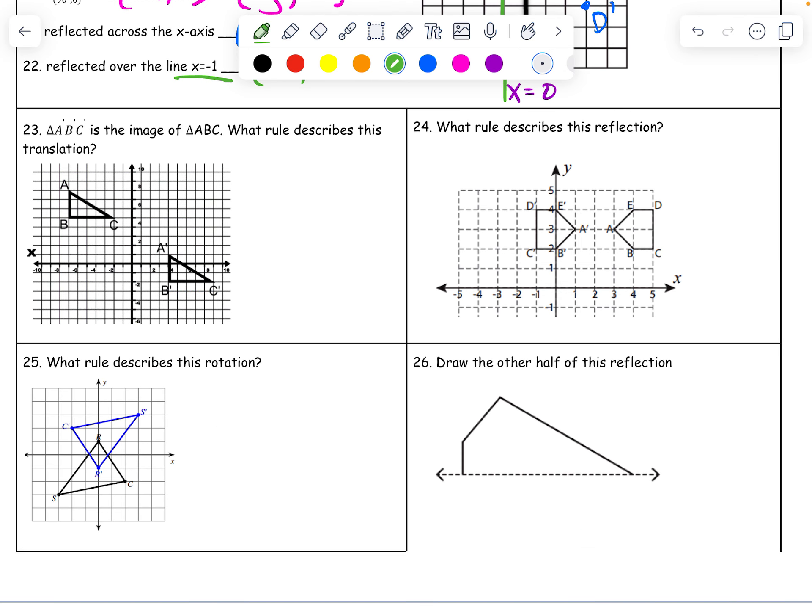All right. ABC is the image. So this is the image. This is the pre. You can see those little apostrophes to show you that. What rule? Okay. So this is a translation. So I'm going to say T. I'm going to do it in vector form. Let's see. How far are we moving? What point do I want to look at? I'm going to look at A.